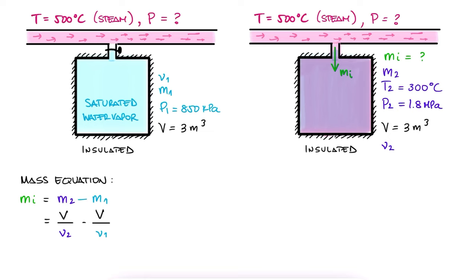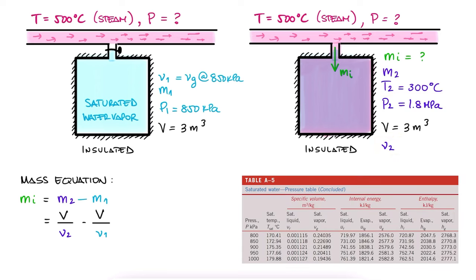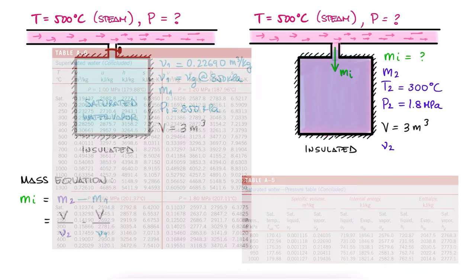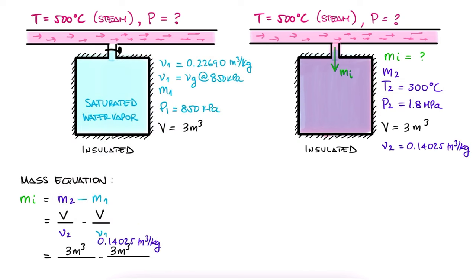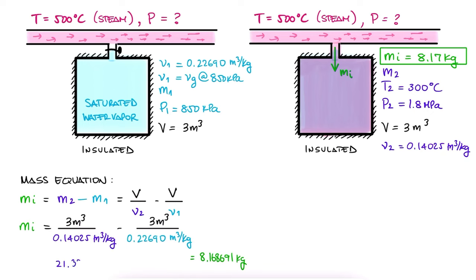Initially, for mass 1, we had the pressure and a saturated vapor, meaning that the specific volume at 1 was Vg at that pressure. As for the specific volume at state 2, we have both the pressure and the temperature. We go to the saturated mixture tables to get Vg at pressure 1, and to the superheated tables to get Vg at that pressure and temperature. With these, we can calculate the mass coming in to be 8.17 kg. And this also tells us how much M1 and M2 were.